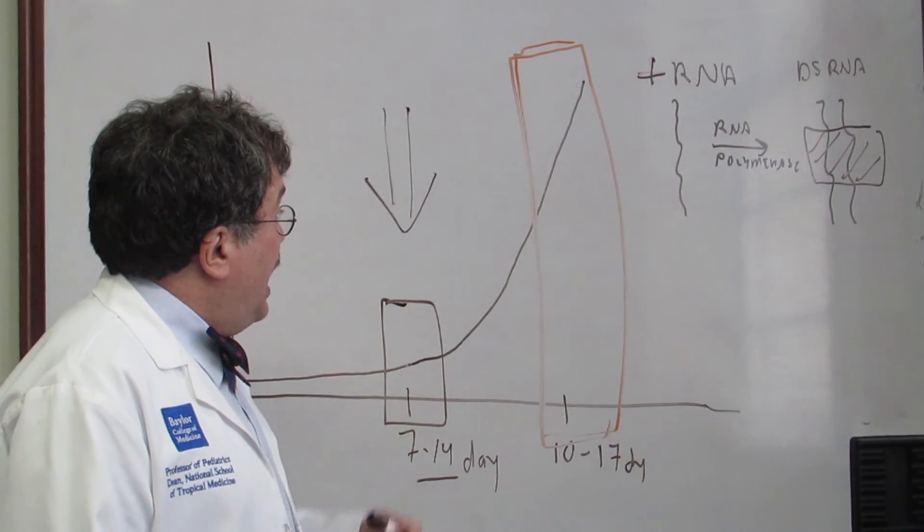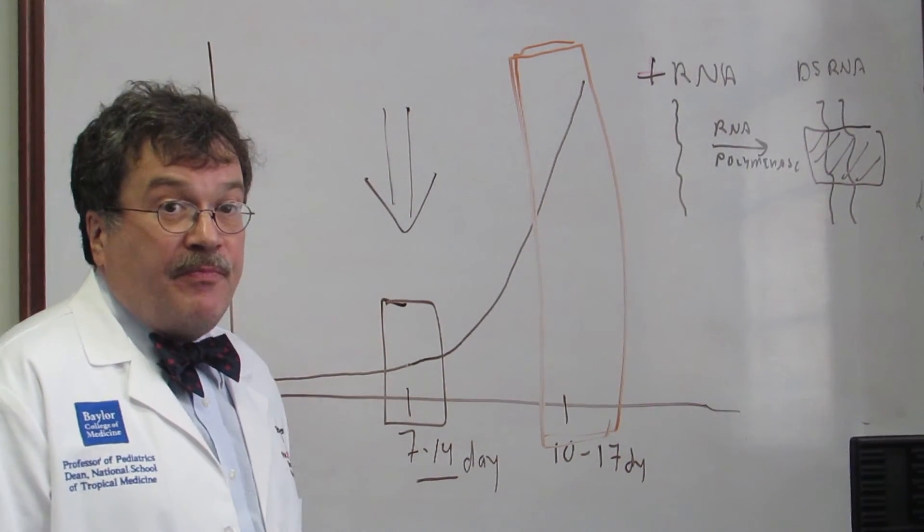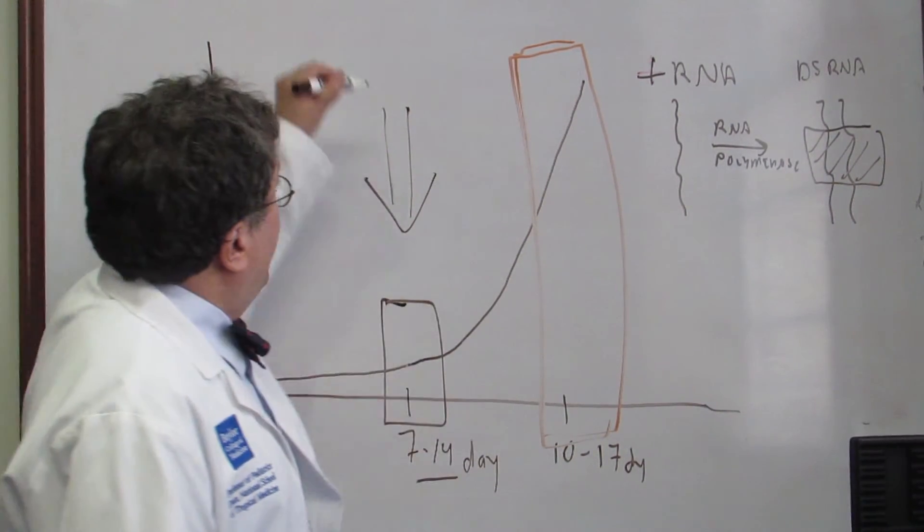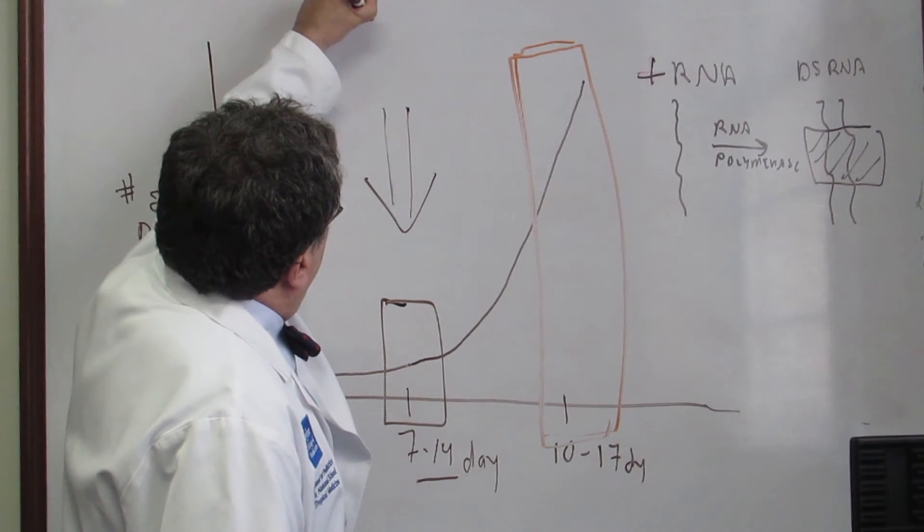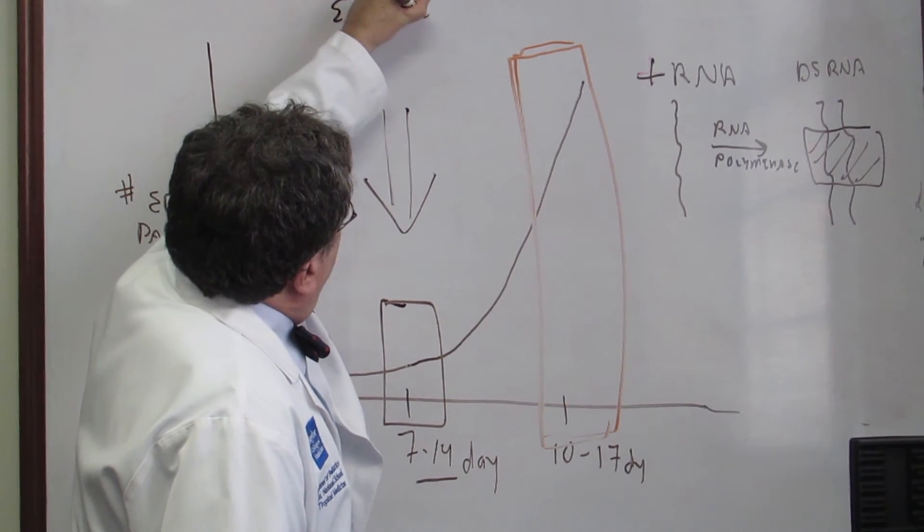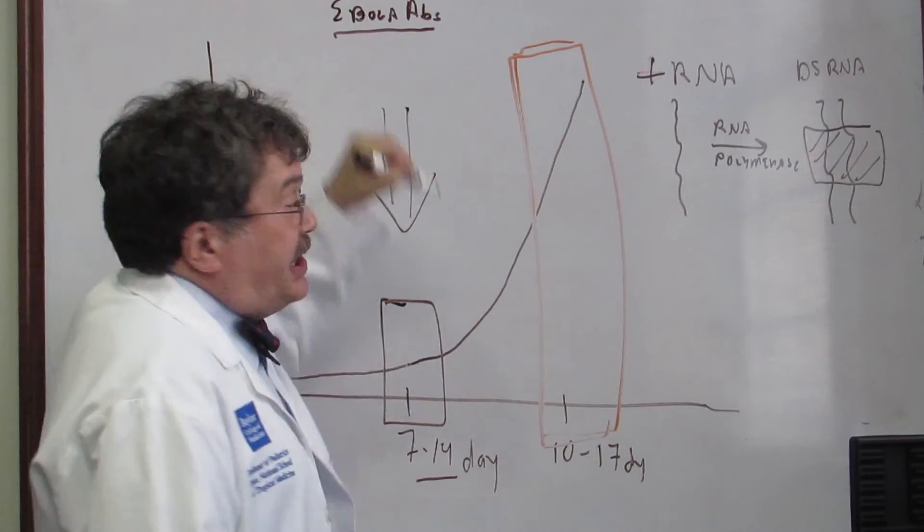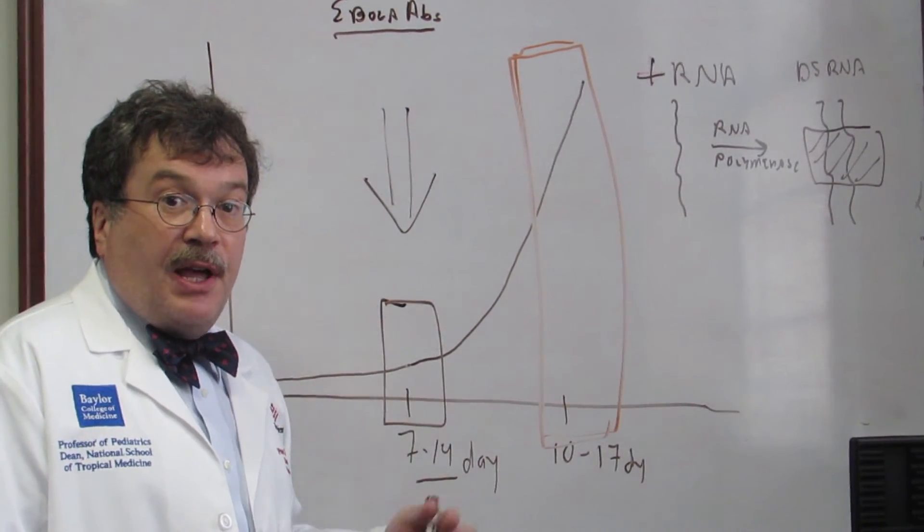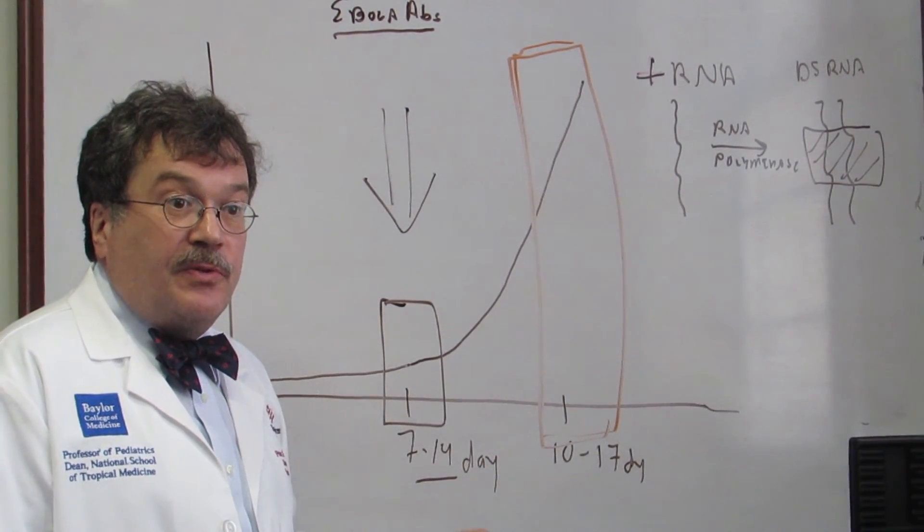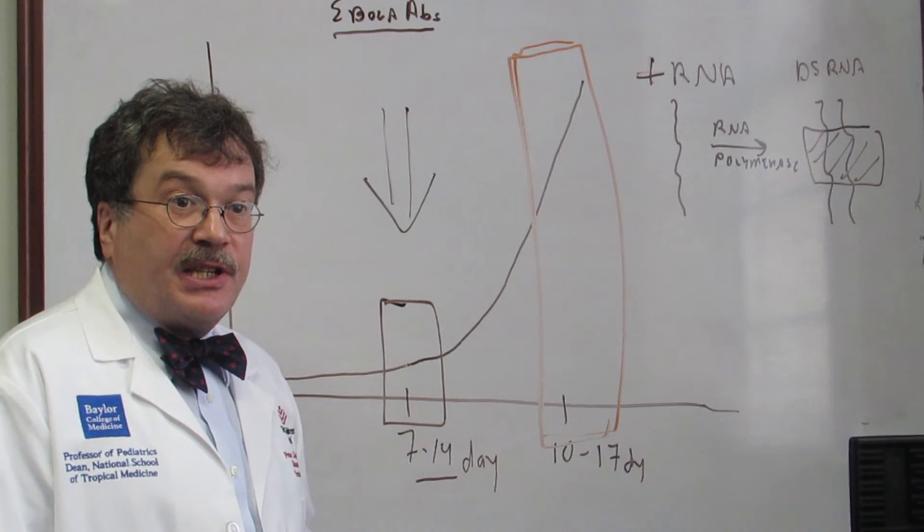So what are the options that we have to intervene? Well, one of them is to give Ebola antibodies. And Ebola antibodies are typically obtained from the blood of an individual who was infected with Ebola virus and then subsequently was able to recover.